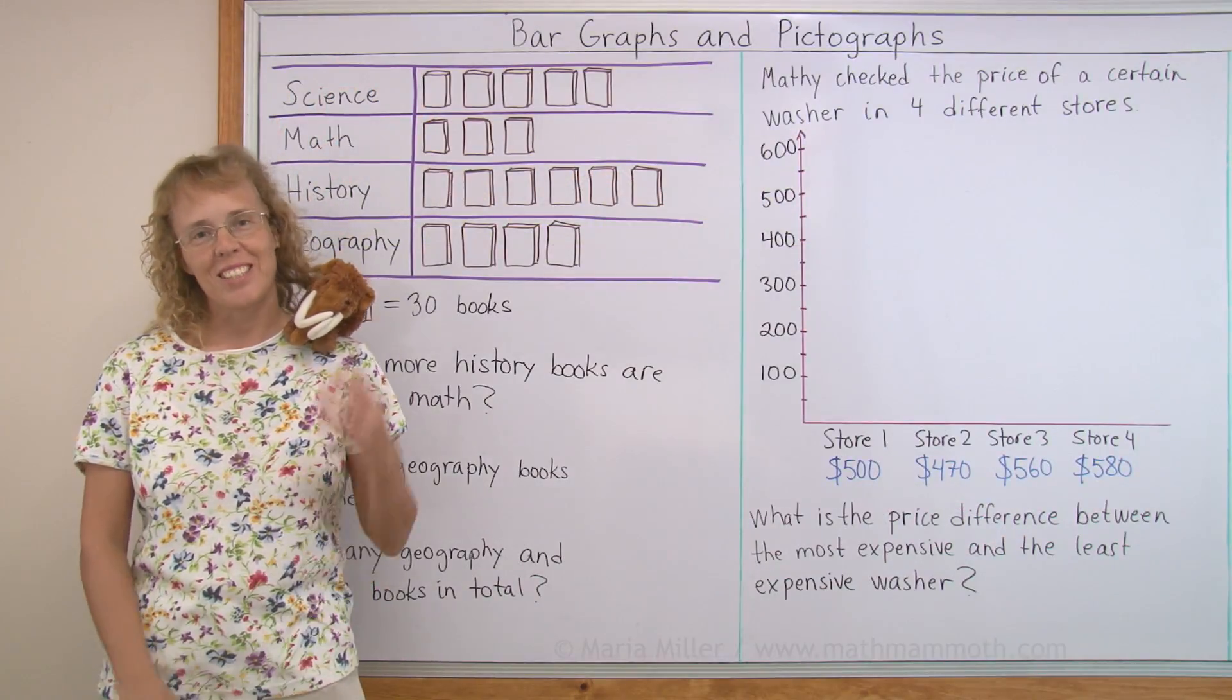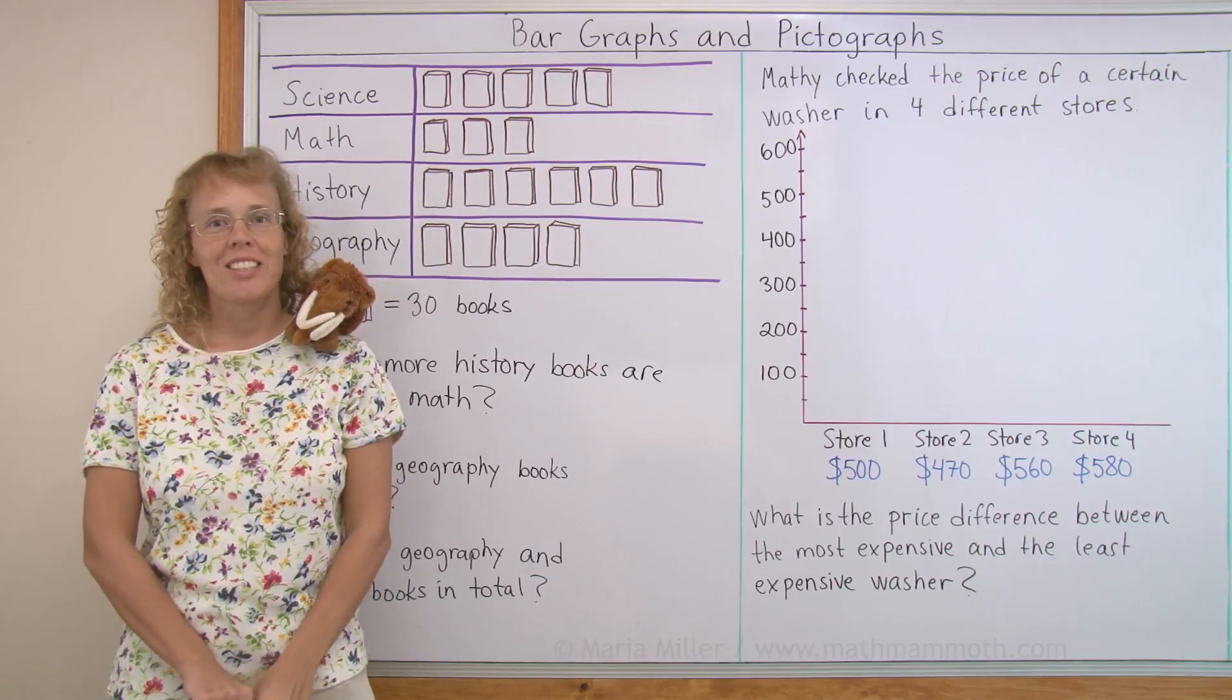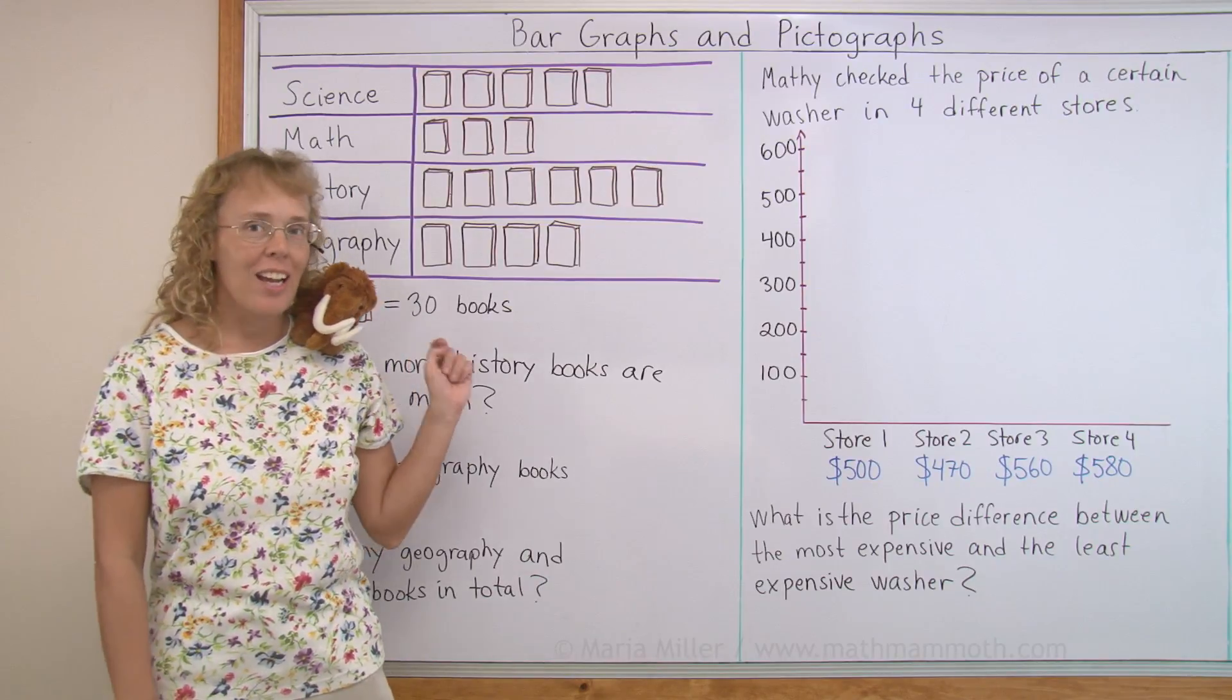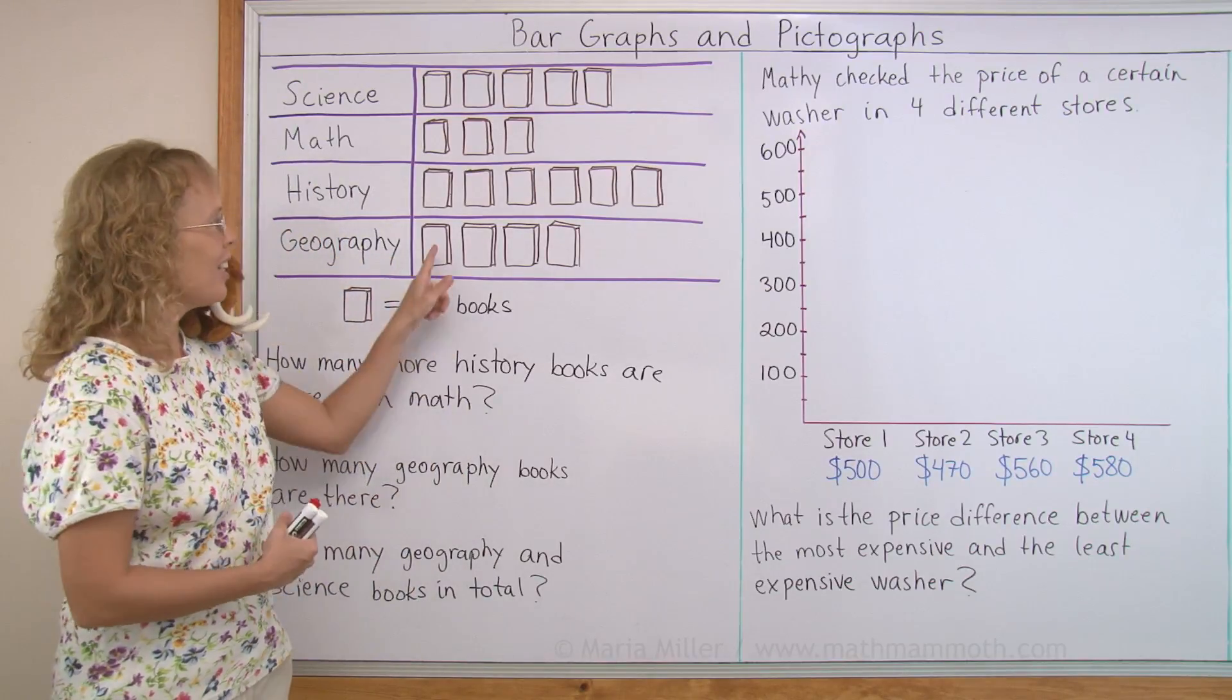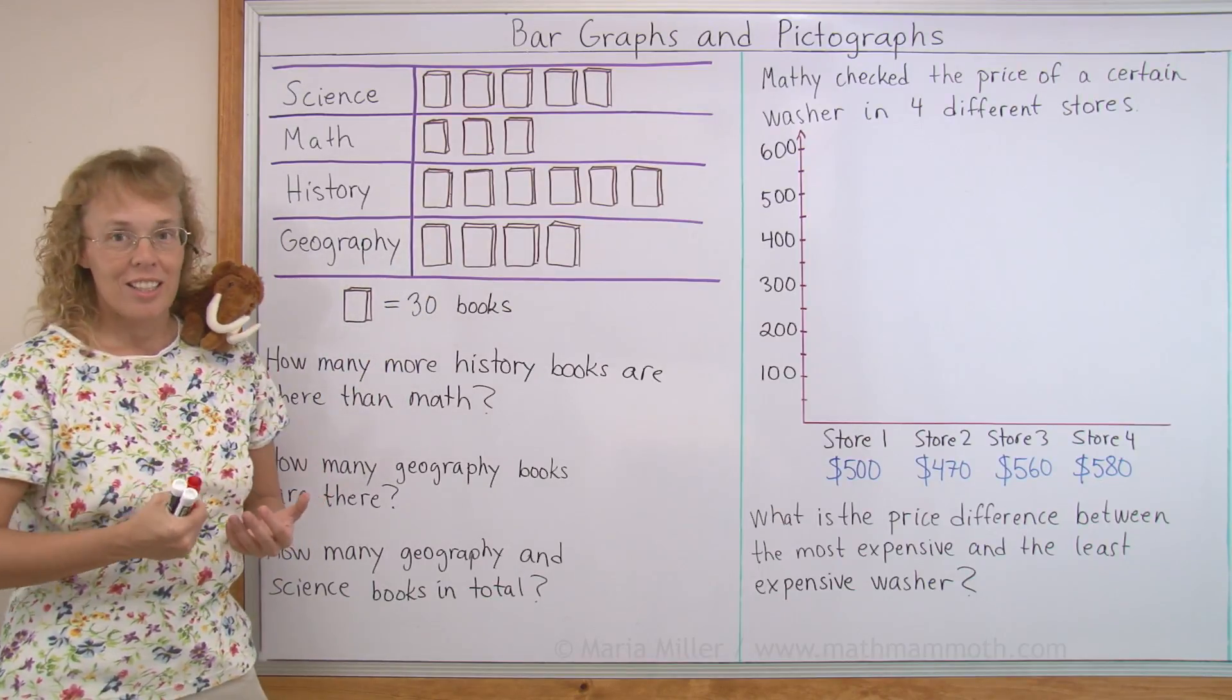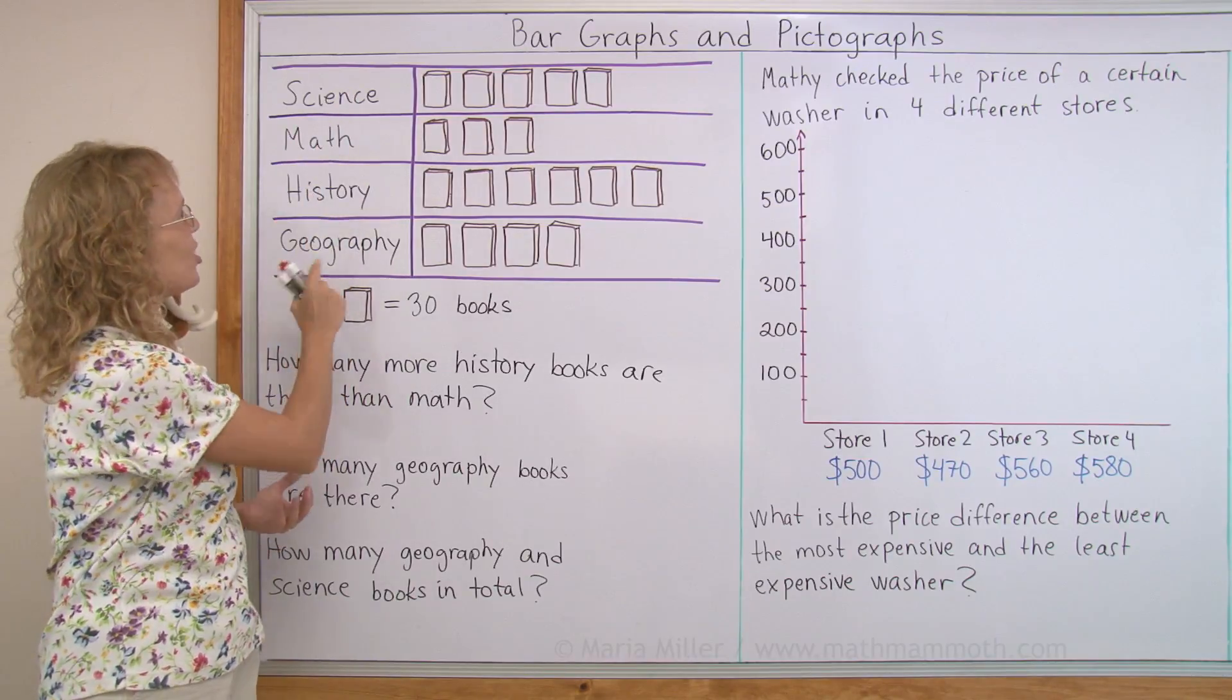Hello, my name is Maria and this is Matti, my mascot. In this lesson we're going to study bar graphs and pictographs. First of all, I have a pictograph. That means a graph where we use some kind of a picture. This time it is a picture of a book. This is showing us how many books are in a certain library for history, math, science, and geography.